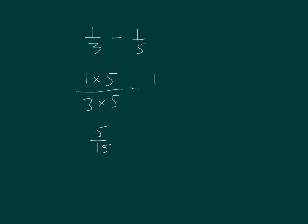What would I multiply the numerator and denominator by? Right — three. So that's minus three-fifteenths. Five-fifteenths minus three-fifteenths is equal to two-fifteenths.